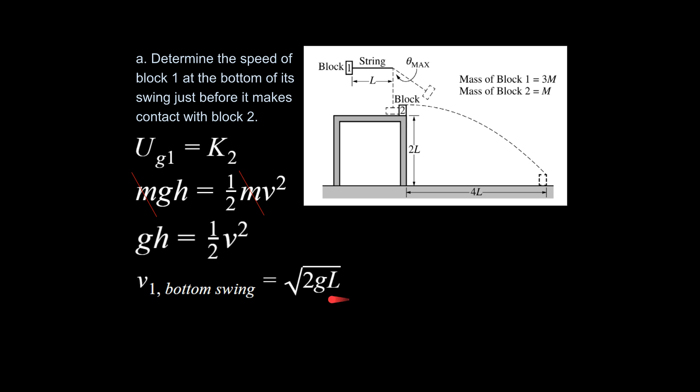Note that they don't give us some values at the beginning, so we just leave the answer in the form v = √(2gL). As is often done with these problems, the answer to an earlier step will be used in a later calculation. So now we know the speed at which block one is moving at the bottom, just as it hits block two.